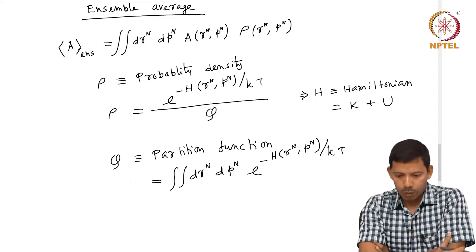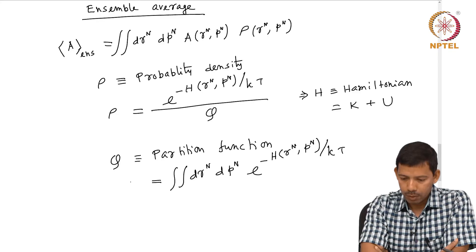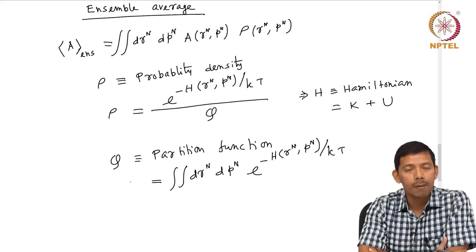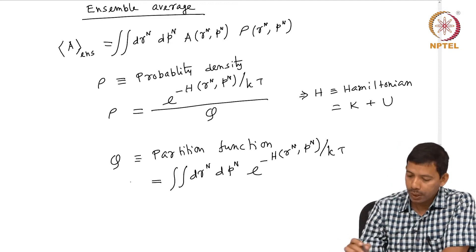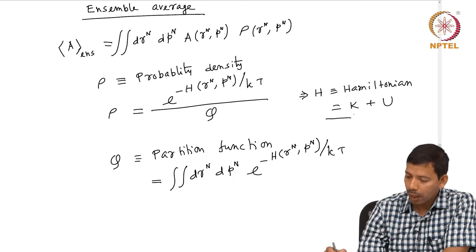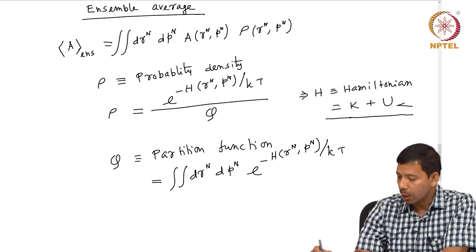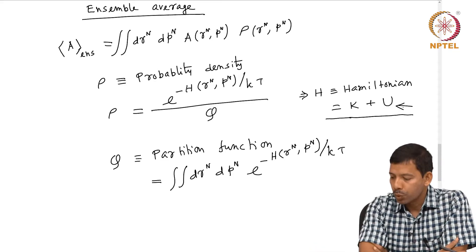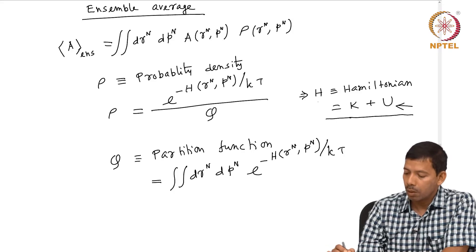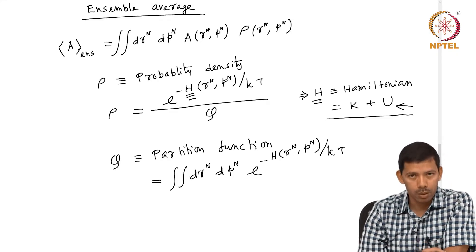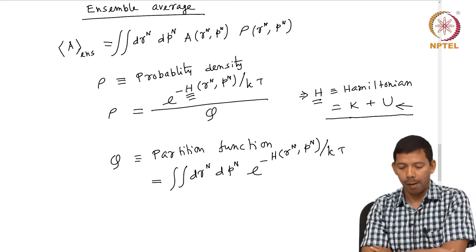Basically, when you take the ensemble average, the concept is very similar to what we have seen in Boltzmann statistics, but how we improved here is that when we take H, we have the interparticle interactions. Interparticle interactions have been introduced into our formalism through the potential energy U, and through the Hamiltonian H we have introduced the interparticle interactions into our calculations.